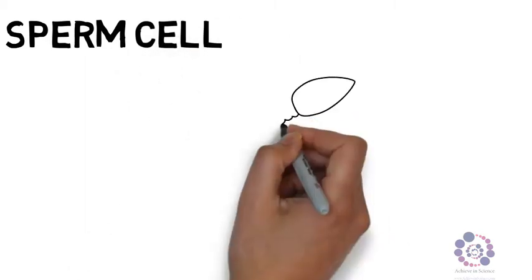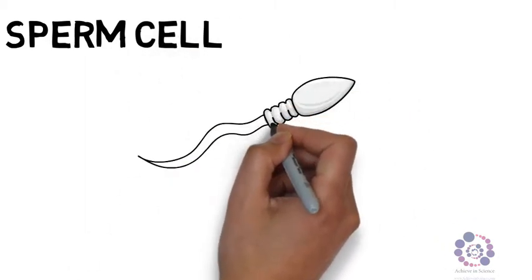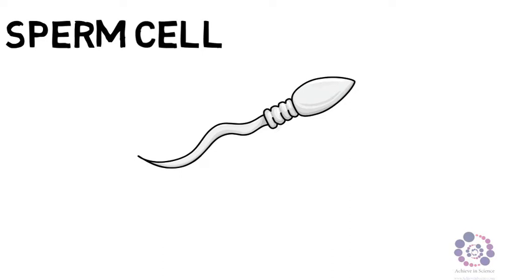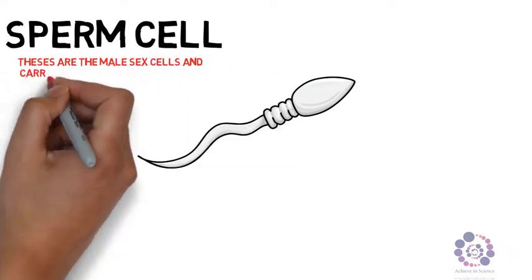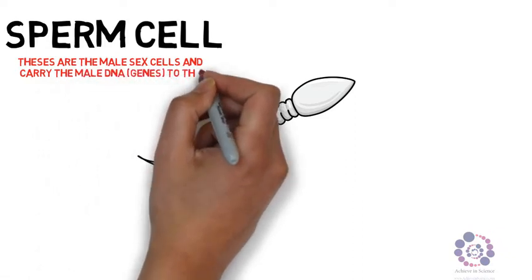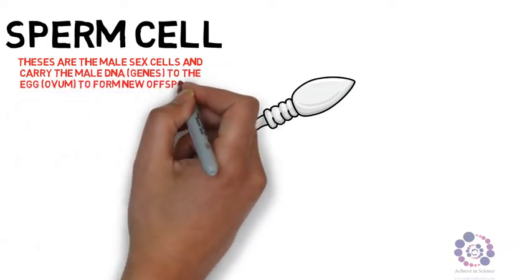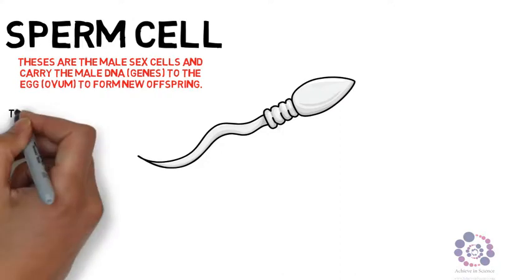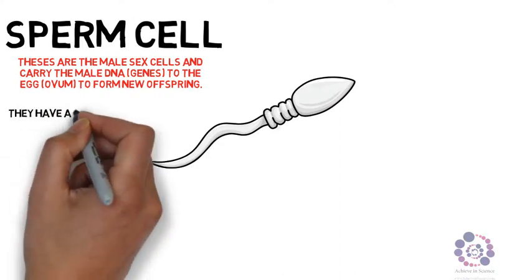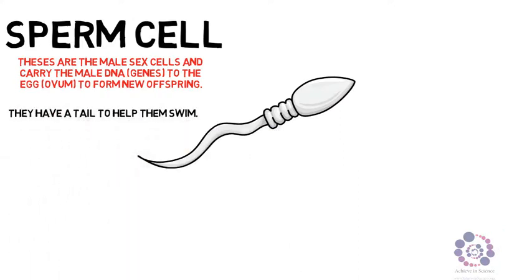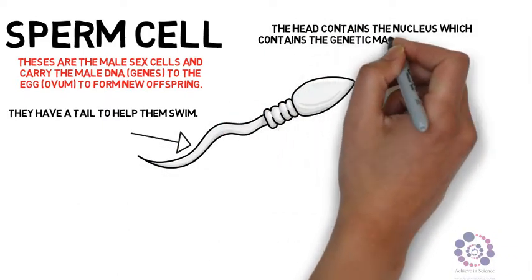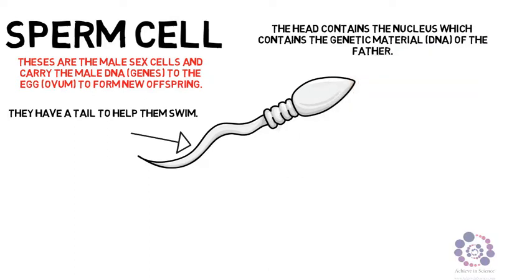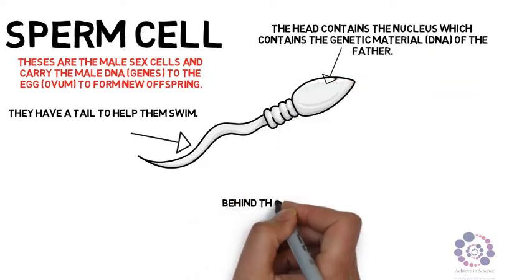Next we have a sperm cell — the cell required for fertilisation, the male gamete. These cells carry the male DNA to the ovum to form a new offspring. Their adaptations include a tail to allow them to swim, to be able to move and reach the egg. They have a head and inside that head is all the genetic material of the father, which is carried to meet the ovum.